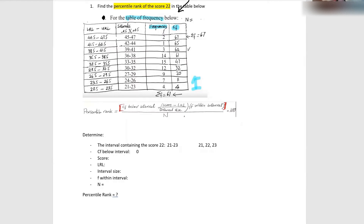I'm going to call someone — even if you get it wrong. Vanessa, can you tell me what is the score that we are looking for? What is the score we are finding the percentile rank for? 22. That's it, the score is 22.